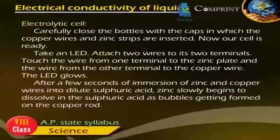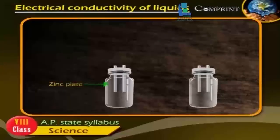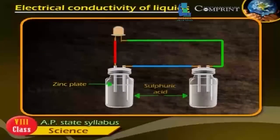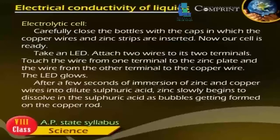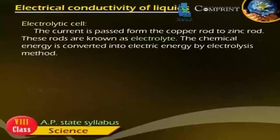Take an LED and attach two wires to its two terminals. Touch the wire from one terminal to the zinc plate and the wire from the other terminal to the copper wire — the LED glows. After a few seconds of immersion of zinc and copper wires into the diluted sulphuric acid, zinc slowly begins to dissolve in the sulphuric acid, with bubbles forming on the copper rod. The current passes from the copper rod to the zinc rod. These rods are known as electrodes. The chemical energy is converted into electric energy by the electrolysis method.